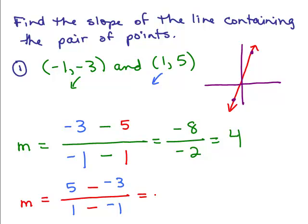So I have 5 minus negative 3 is 8, and 1 minus negative 1, remember it's because of the plus plus thing, is 2, I will get 4. So the slope of this line going through those two points is 4.